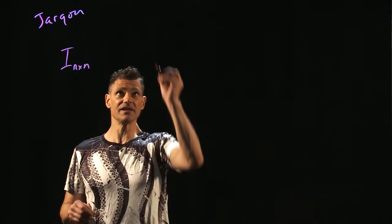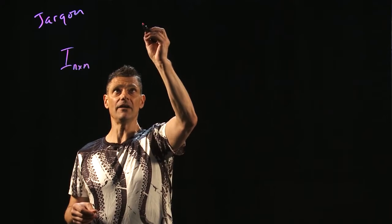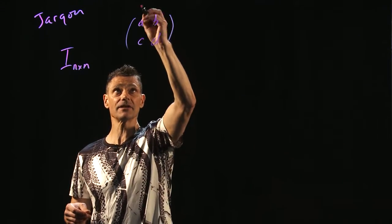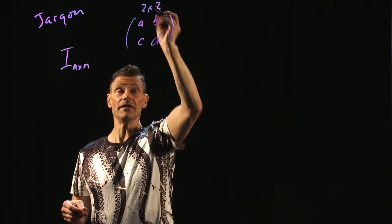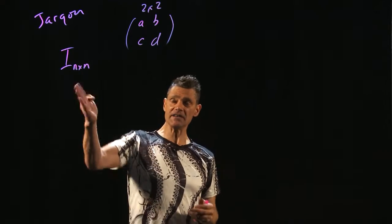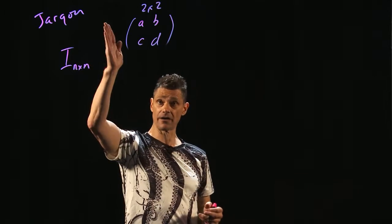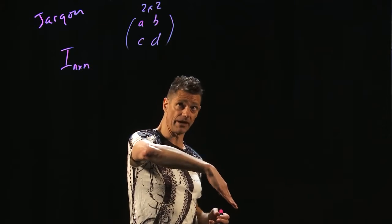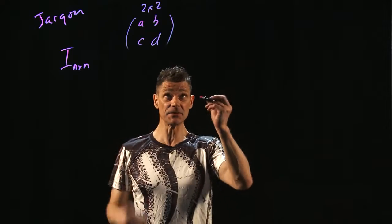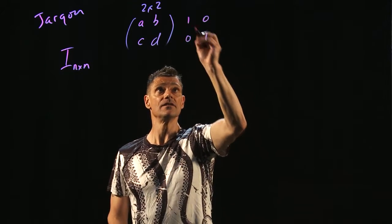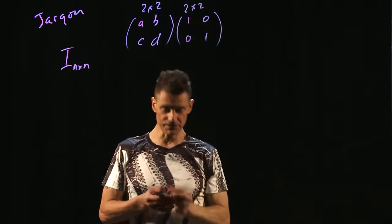It's usually written as I_n by n for whatever n is. Let's do an example of this. So if you have A equals [a, b, c, d], some generic 2 by 2 matrix. And then clearly, all identity matrices look like this: it's 1s down the diagonal, starting high left, going low right, and 0s everywhere else. So in this particular case, this looks like [1, 0, 0, 1]. This is also a 2 by 2 matrix.